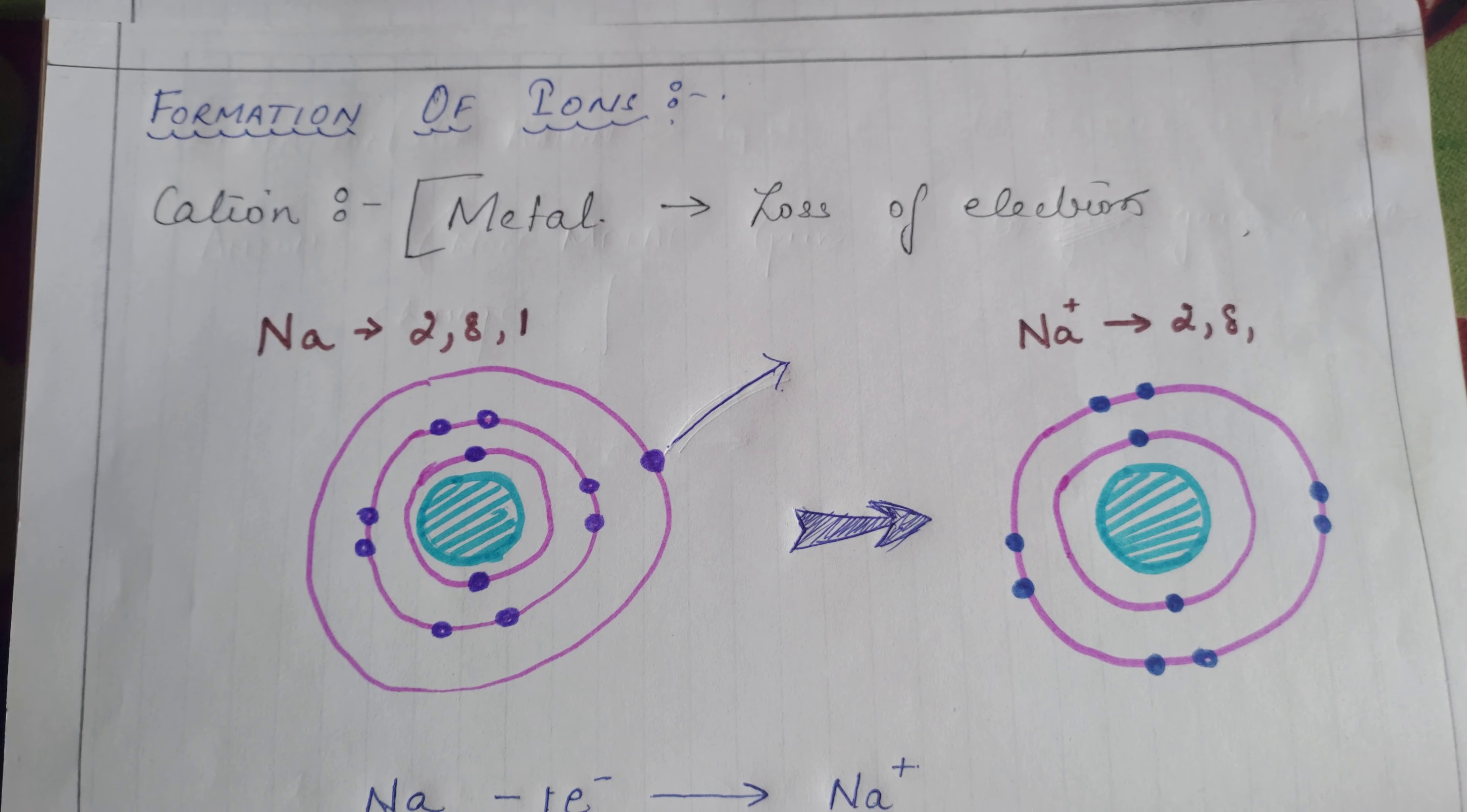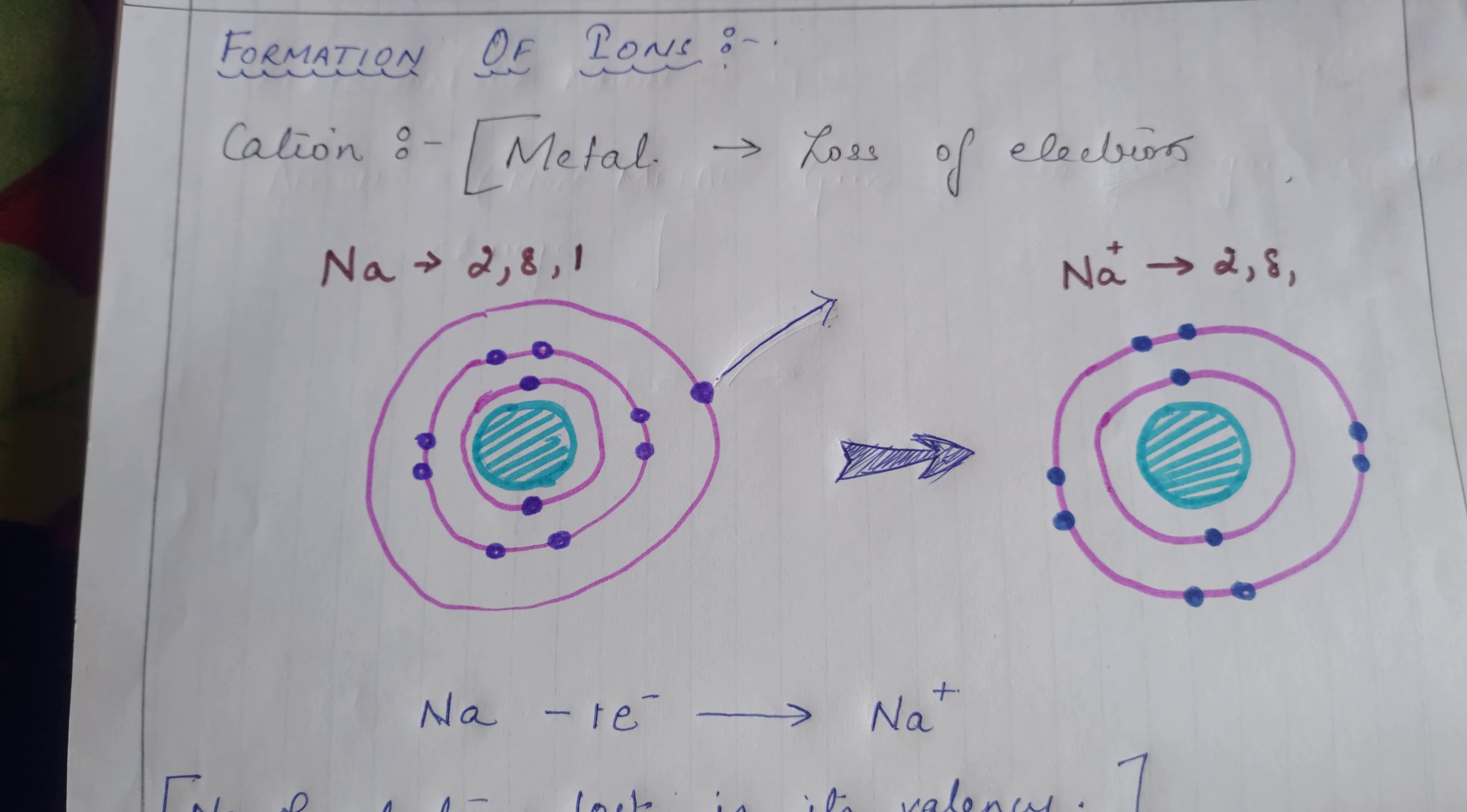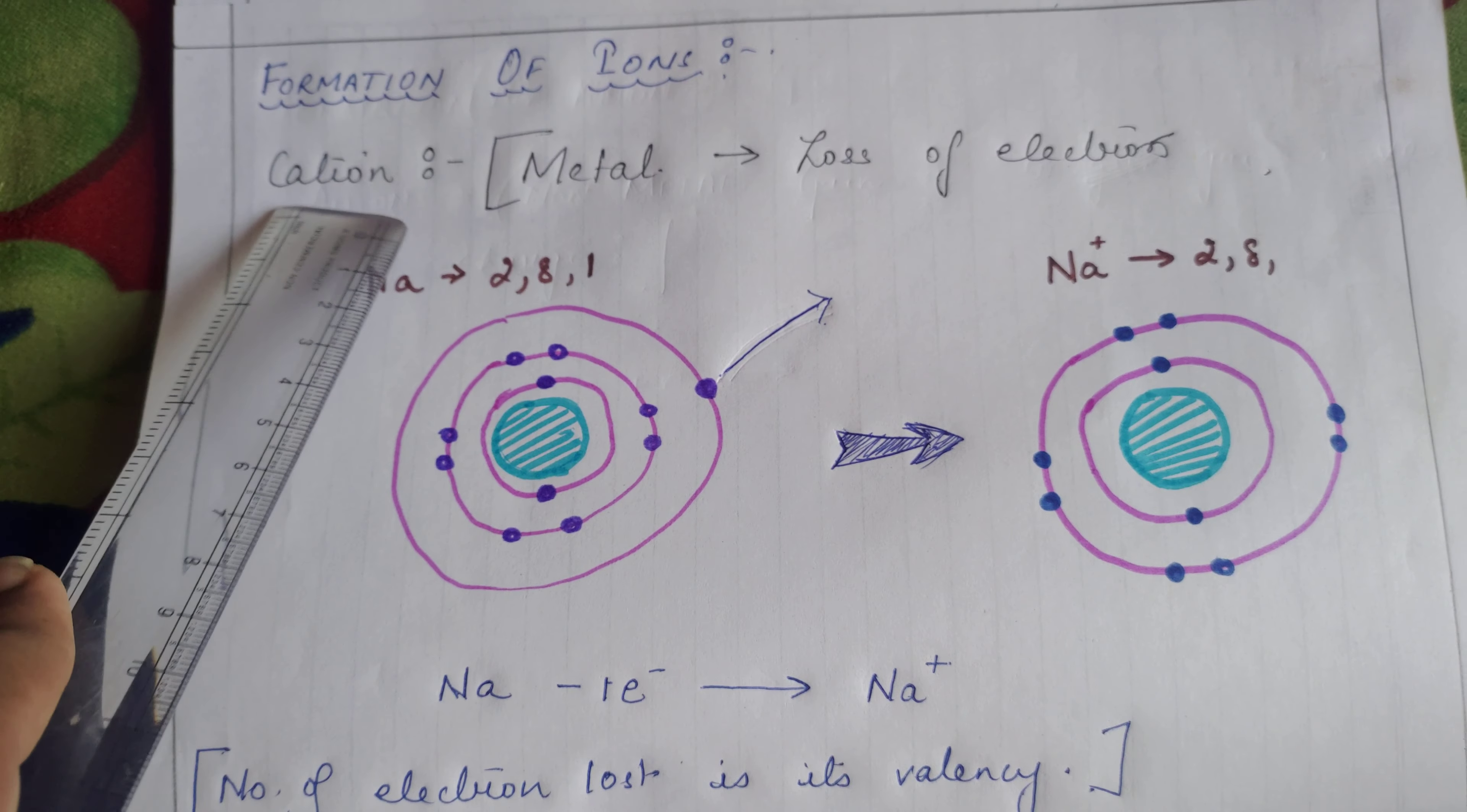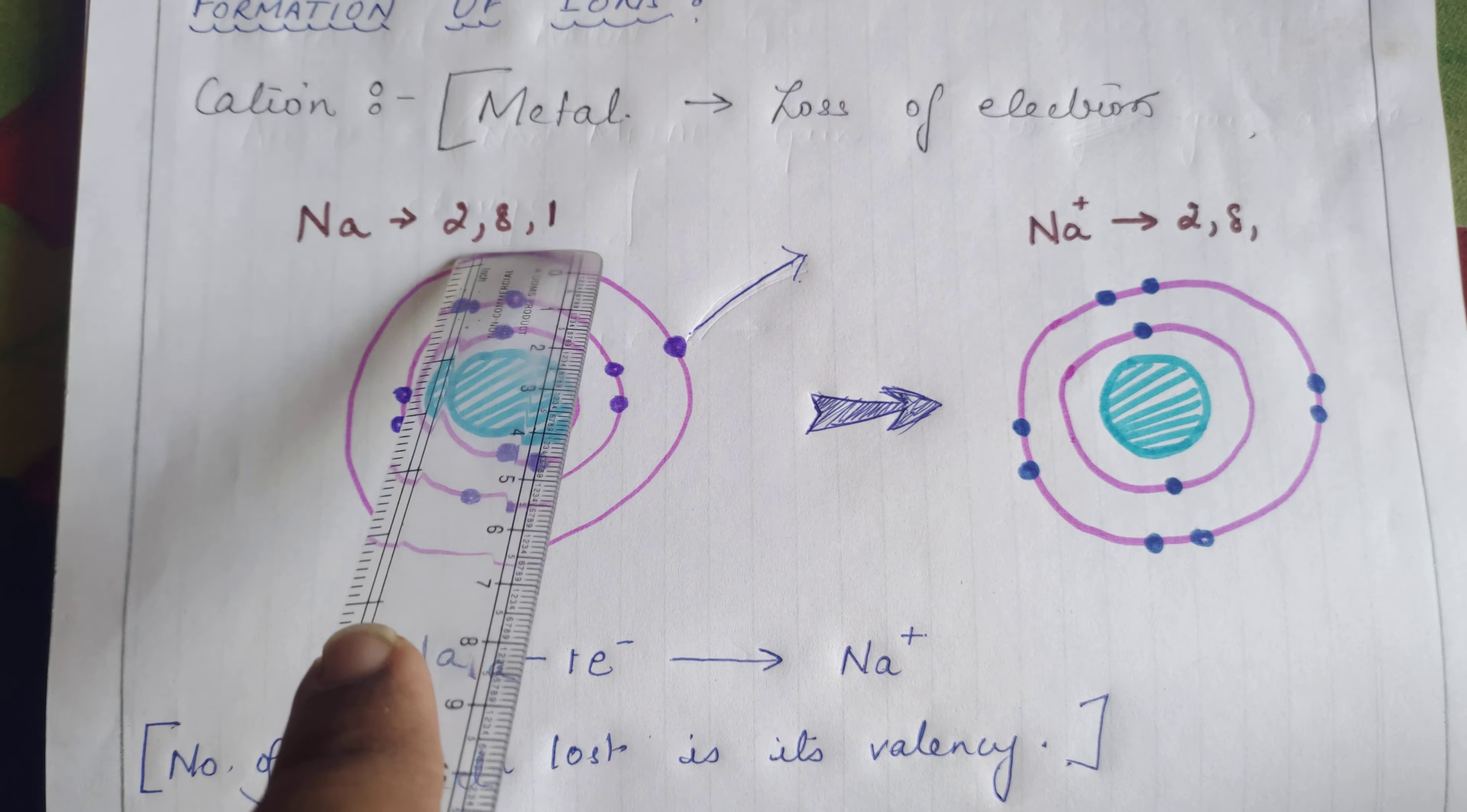Once you have understood the concept of valency, let's move to the idea of how ions are formed. Understand these are charged atoms. How do they gain charges? Basically, the method of attaining a charge is either by losing electrons or by gaining electrons. First, we'll talk about cations. Remember, a cation is a positively charged ion. Generally, a metal atom will lose electrons to form a cation.